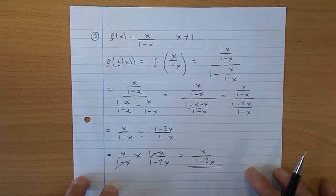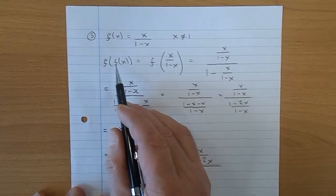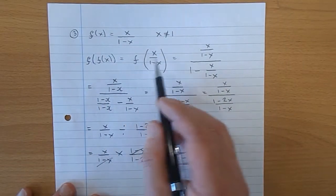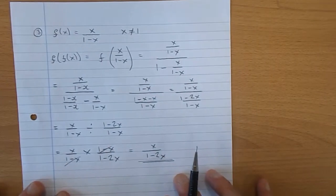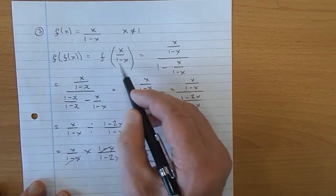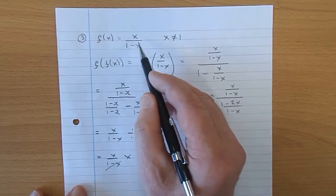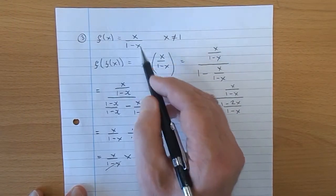They're asking for f of f of x. So f of f of x is f of x over 1 take x, that's that one there. And how do you do that? Well, you replace that whole function everywhere you see an x there, both places.